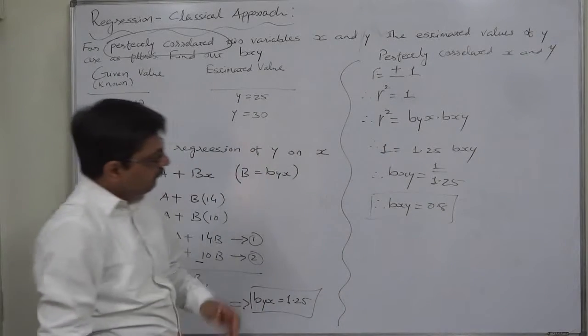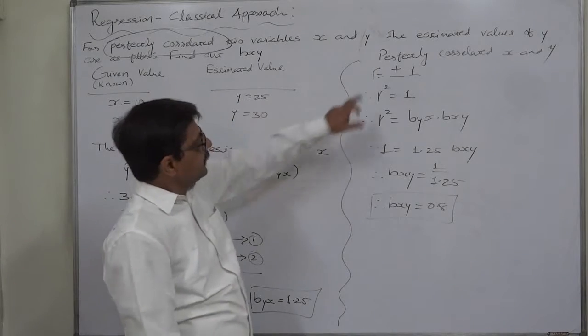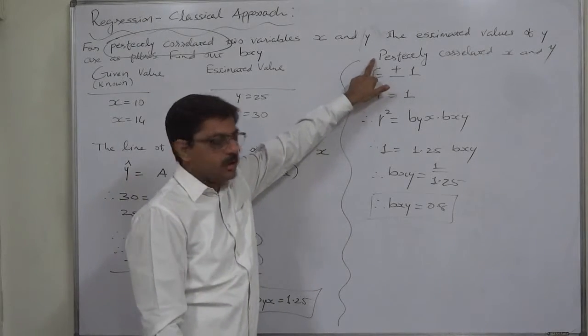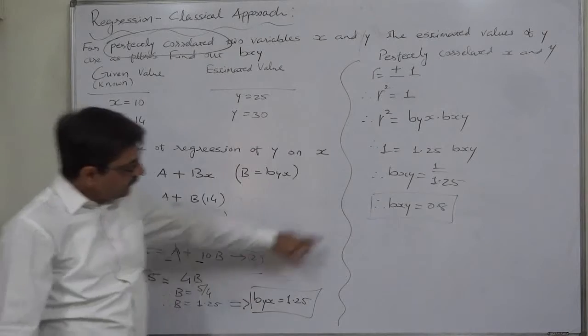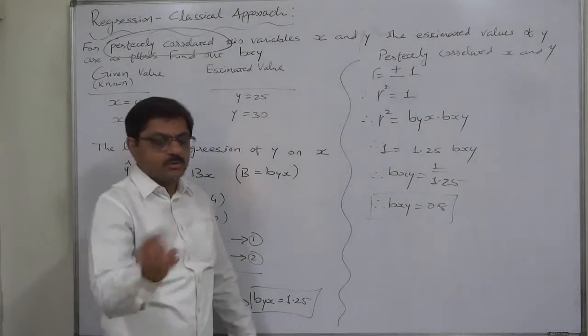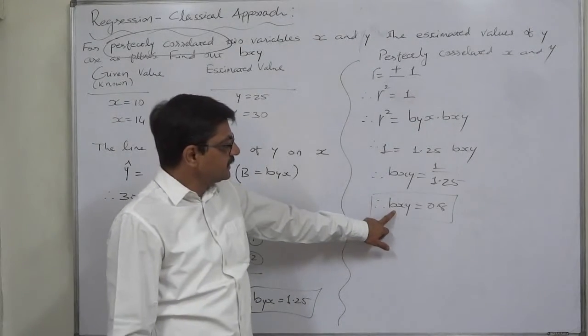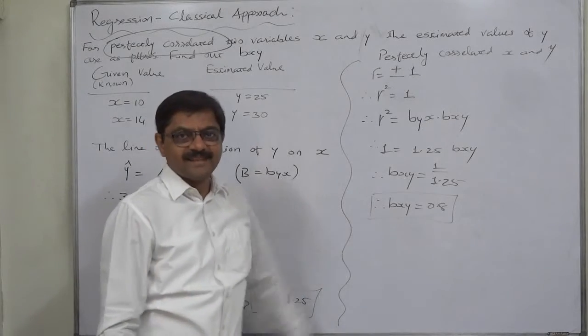Or, say we used a very important property that if the two variables are perfectly correlated, then the two coefficients of regression are reciprocal to each other. Hence, b x y is 0.8. That's it.